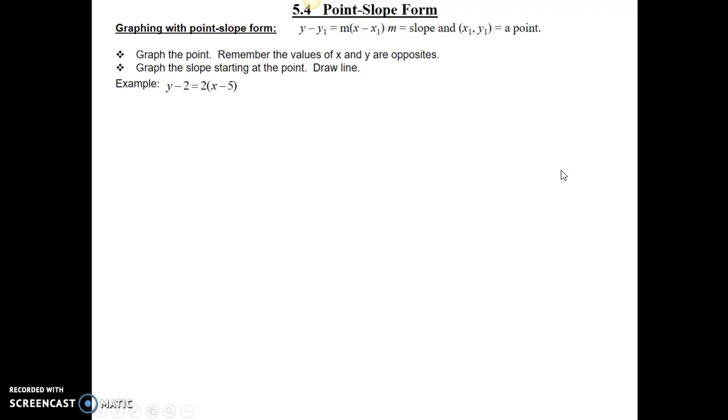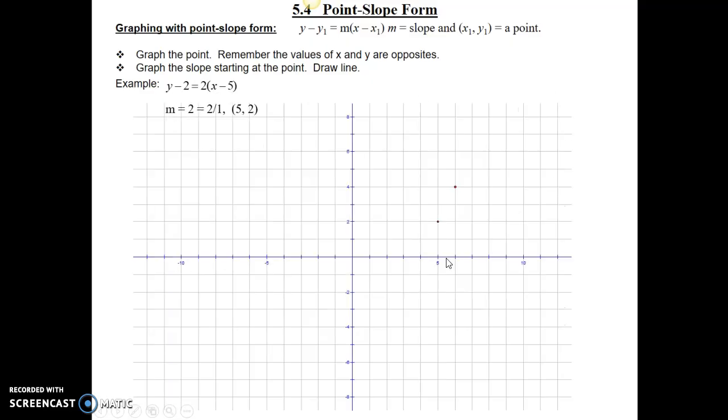First off, I need to identify the information I need. Here I see that my slope is 2, my point is 5 comma 2. So, first thing I'm going to do is plot this point right here, 5 comma 2. That's over 5 and up 2. Remember, this is x comma y.